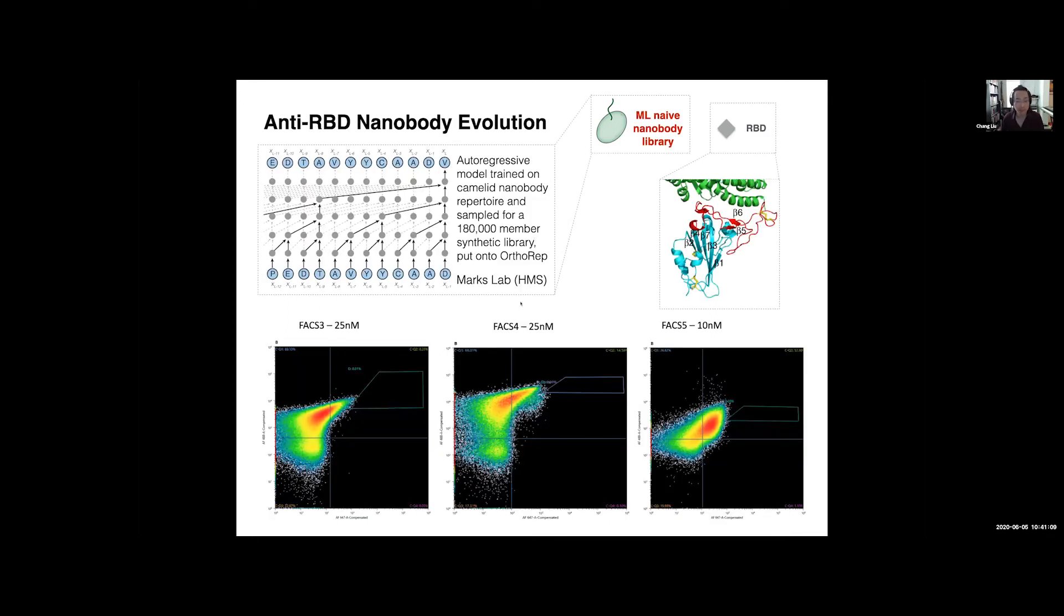Now, let me get to a couple of preliminary results slides on what we're doing with COVID-19. So here we are starting with a nanobody library as what we're encoding on OrthoREP. This is a particularly interesting one. It is a computationally designed nanobody library that uses ML on the Camelid nanobody repertoire to extract the hidden variables behind what makes existing repertoires good. And we basically only sampled 180,000 members of the synthetic library and put it onto OrthoREP.